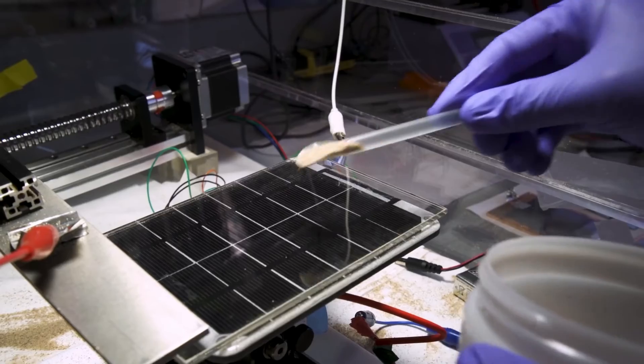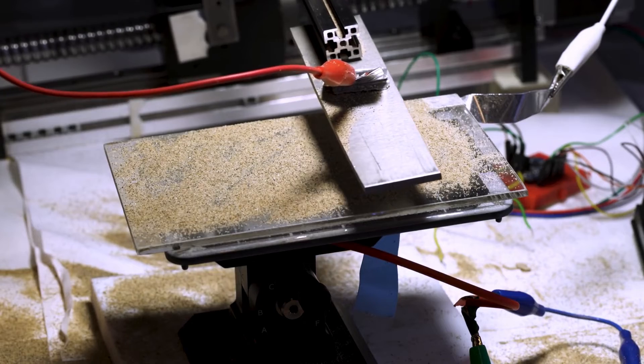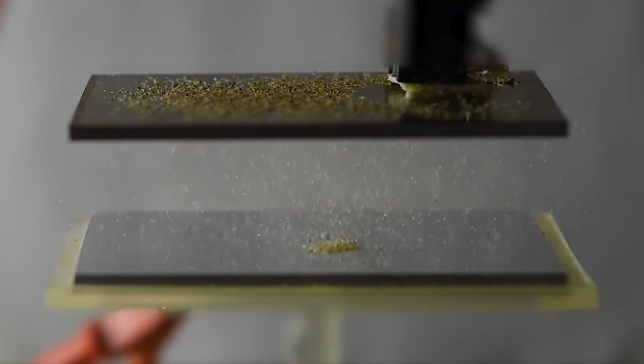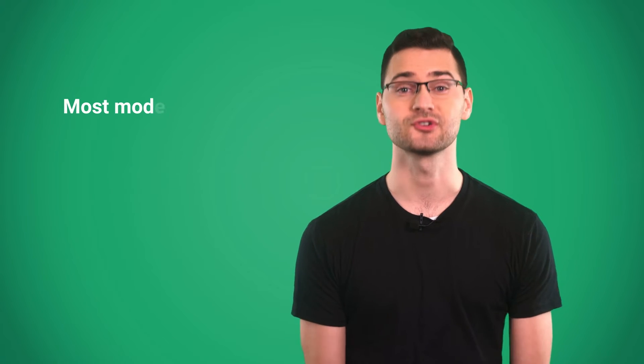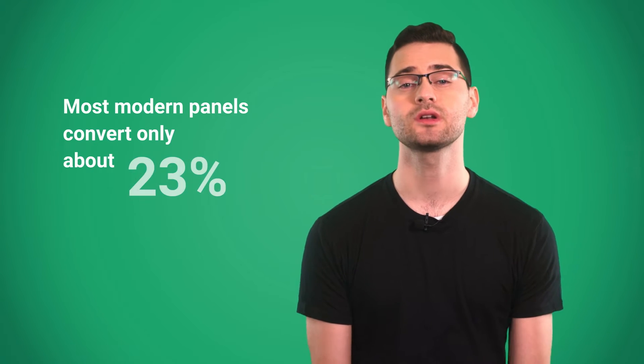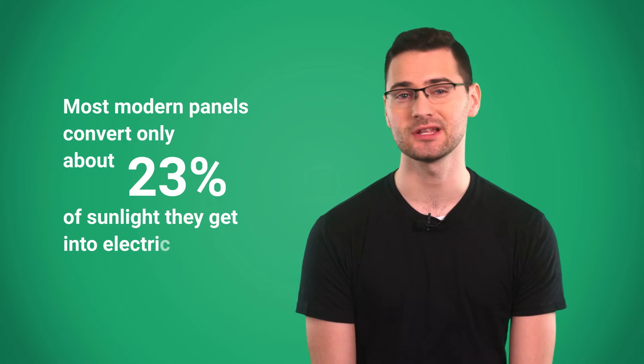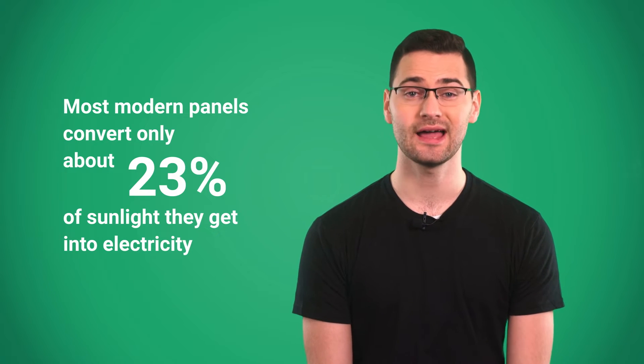Recently, MIT engineers developed dust magnets, which will hopefully clean panels in the future without water. The third disadvantage is that solar panels have relatively low efficiency. Most modern panels convert only about 23% of sunlight they get into electricity. It translates to a high land footprint.